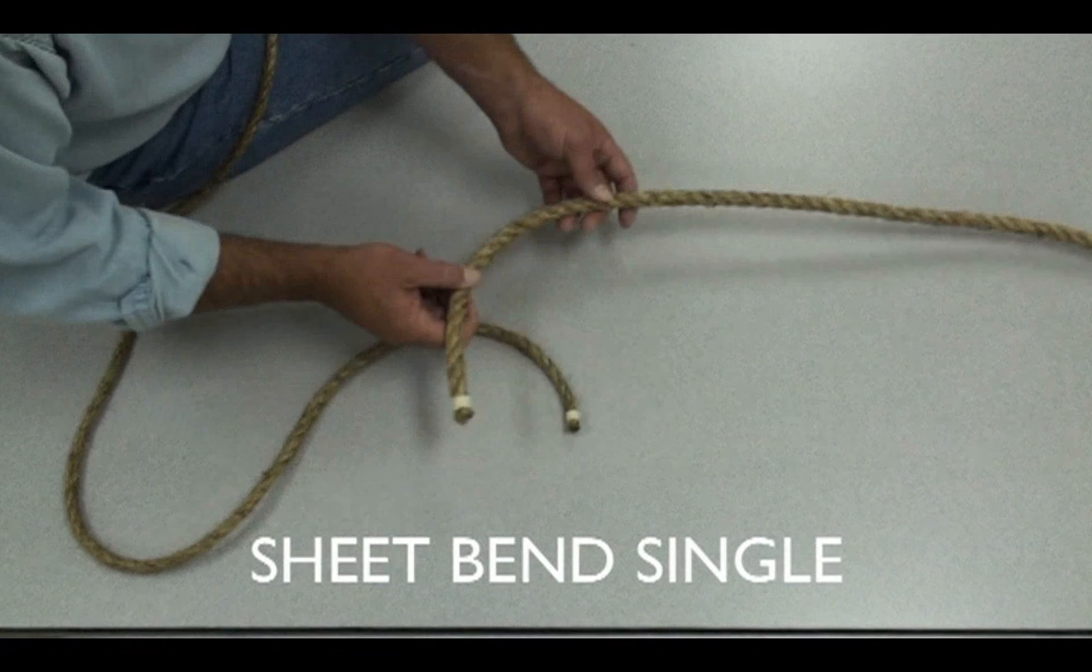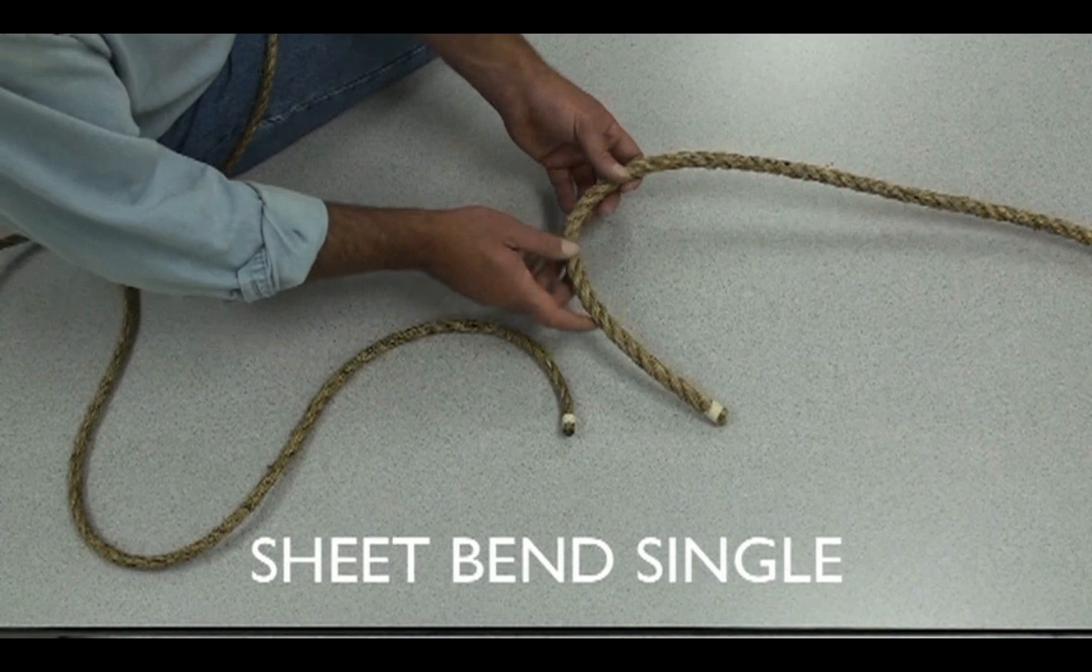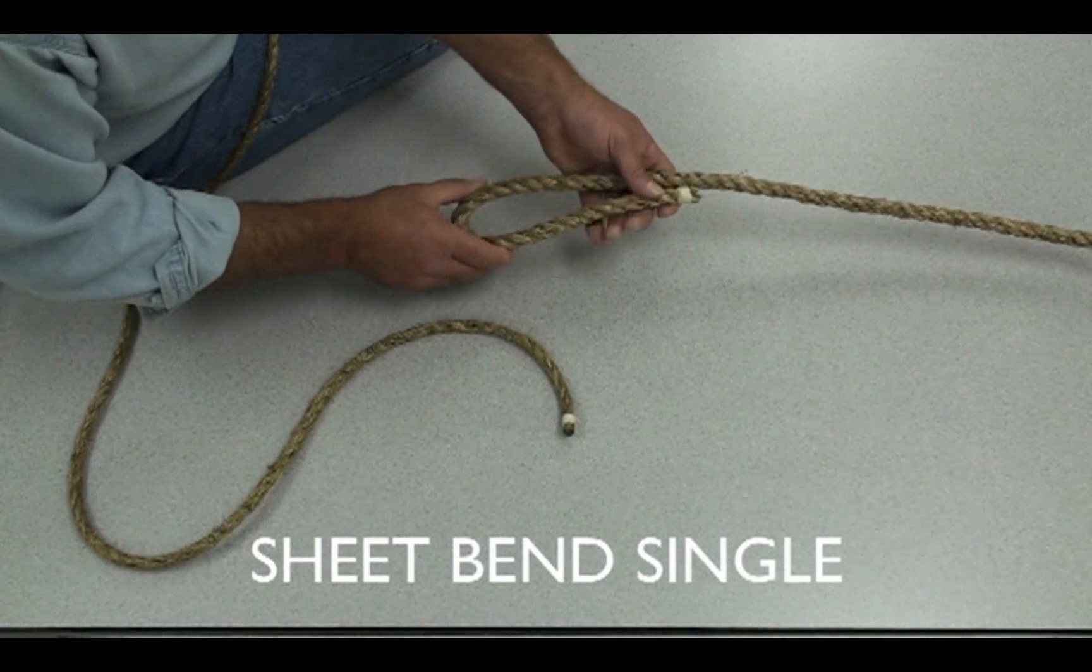So we have a 5/8 rope and a half inch rope. I like to tie with the lead on this way. Standing end going up, we'll make a bend.